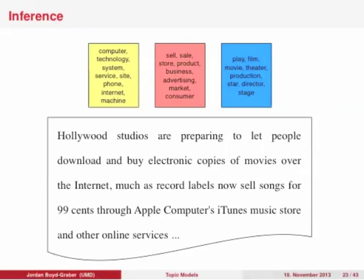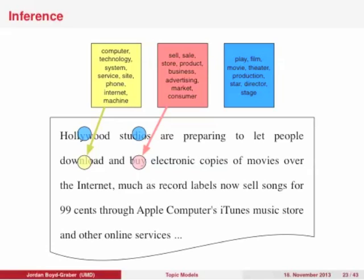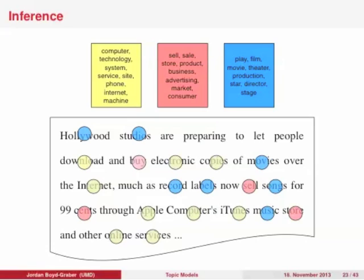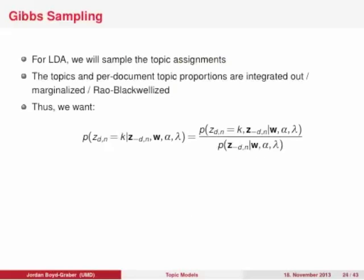In inference, you have a bunch of words and you try to assign each to one of your topics. Hollywood might come from the arts topic, download from the technology topic, buy from the business topic, and so on. We systematically reassign each word to topics in an iterative fashion. We sample the topic assignment of one individual word based on the assignments to all other words — this is the intuition behind Gibbs sampling. We sample only the topic assignments z and integrate out (marginalize out) all other latent variables — the thetas and betas. This is also called Rao-Blackwellization.